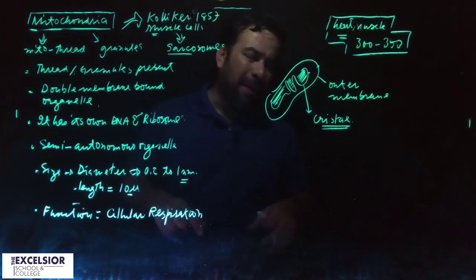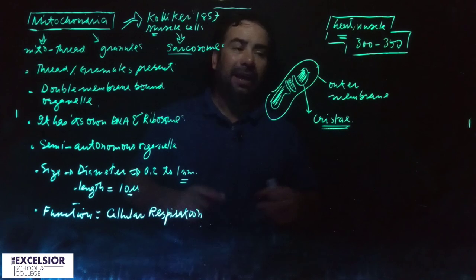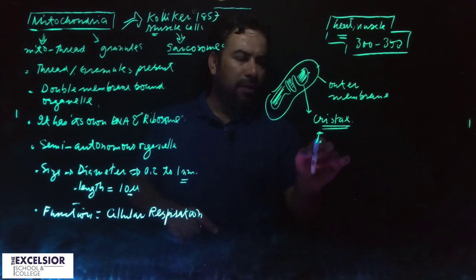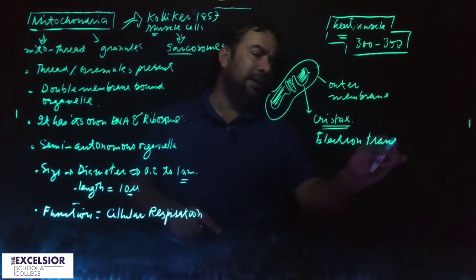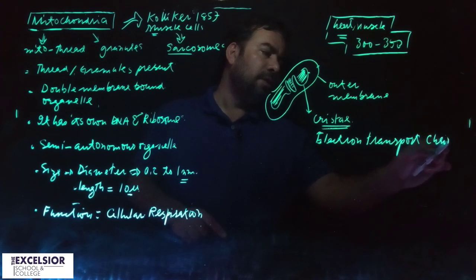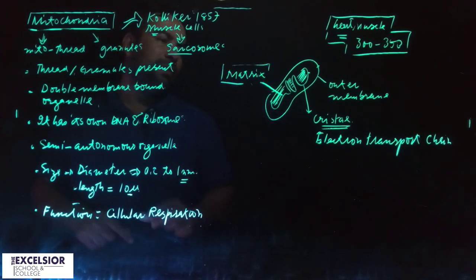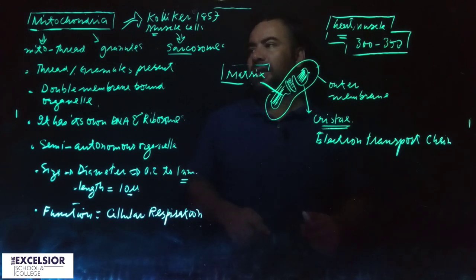The cristae have a lot of complexes embedded in it. Some of them perform the function of enzymes. You have the electron transport chain on the cristae. There was a fluid - this is called mitochondrial matrix.